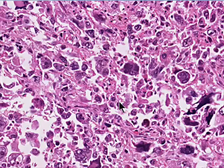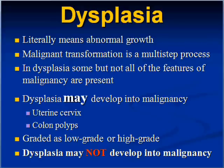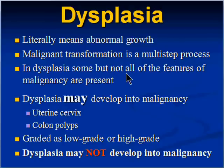If the only two terms you remember are pleomorphism and hyperchromasia, that's about all you'll ever see on a pathology report. Now, let's say that tumor cells do not have frankly malignant or anaplastic features, but we suspect they are going to. This is the whole gray zone between benign and malignant called dysplasia. Dysplasia means abnormal growth — it's part of the malignant transformation process, which may take years, months, or weeks. Some features we discussed are present, but not convincingly enough to call it frank anaplasia.